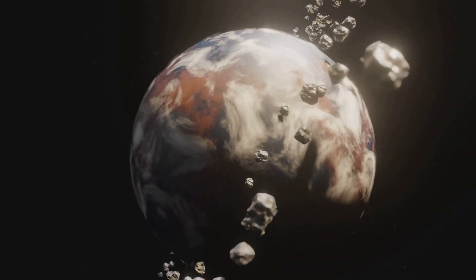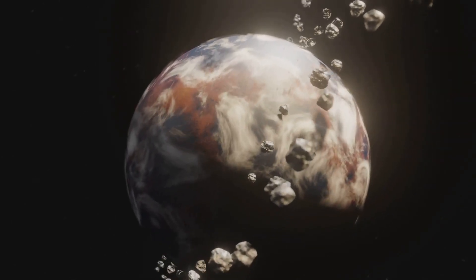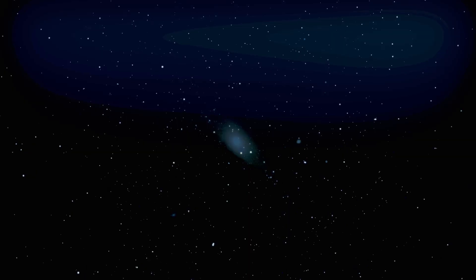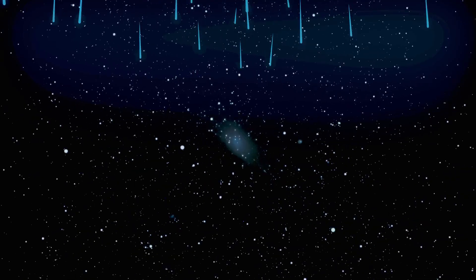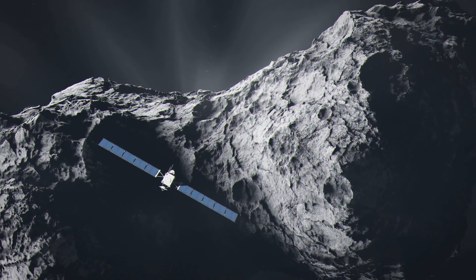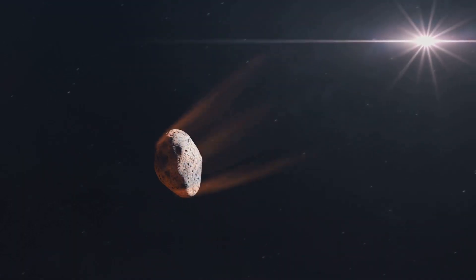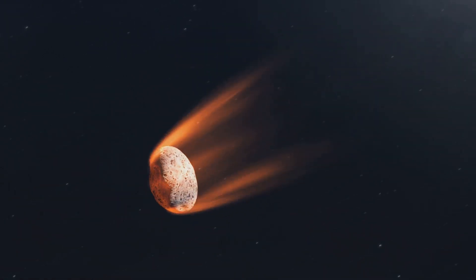While some of Earth's water may have been present in the original material that formed the planet, a significant portion is thought to have arrived later, delivered by comets and asteroids. These icy bodies, hailing from the colder, outer regions of the solar system, carried water ice within their structure. As they collided with Earth, this ice melted and vaporized, becoming part of the planet's growing water inventory.